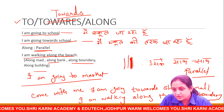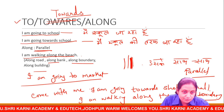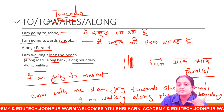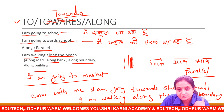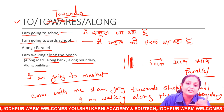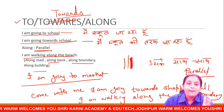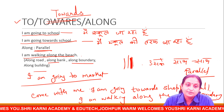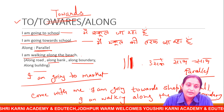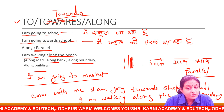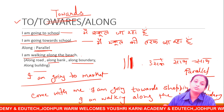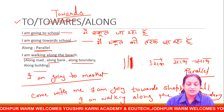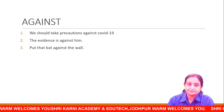ये तो इतने general sentences हैं कि दिन में 50 बार आपके मुँह से निकलते हैं. 'I am going to school', 'I am going to market' — वहाँ particular जा रहे हैं. 'I am going towards school' — उस तरफ जा रहे हैं. 'I am walking along the school boundary' — parallel चल रहे हैं. To, towards, along — clear हो गया सबको? तो next पर move करते हैं.